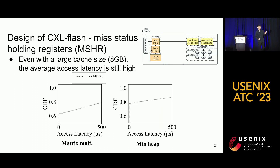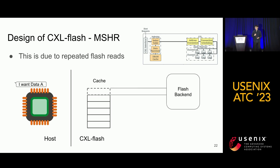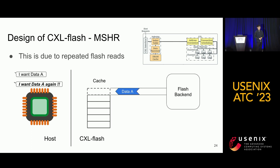For workloads such as matrix multiplication and heap, even with a large cache, the average access latency is still very high. Looking at the CDF of access latency, the device is experiencing long-tail latency. This is primarily due to what we call repeated flash reads. If the host tries to access data A and it's not in the cache, the device must fetch it from the flash backend. But before data A is ready, subsequent requests for data A are treated as another cache miss, forcing the device to read the data again — these are repeated flash reads, causing unnecessary flash memory traffic.